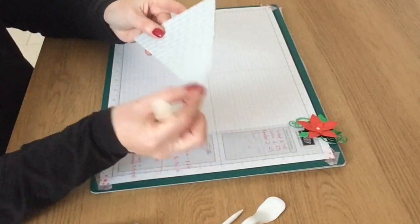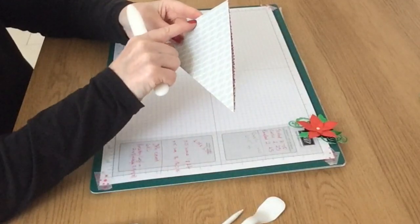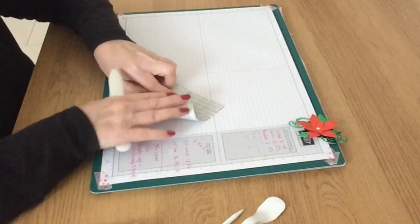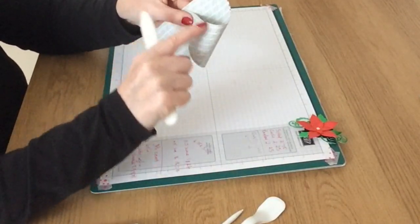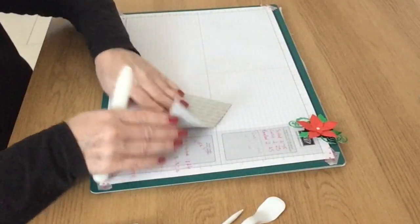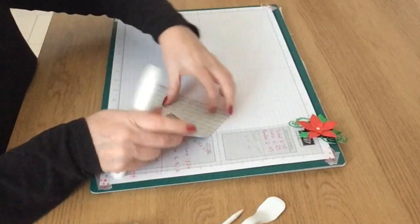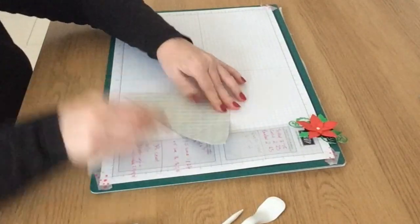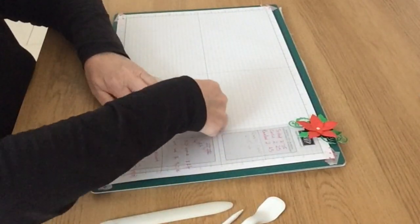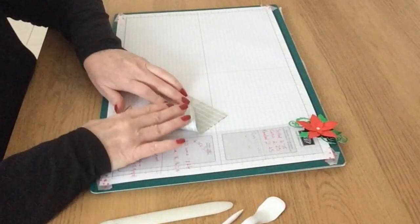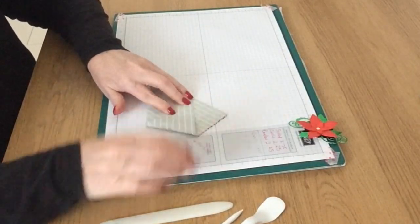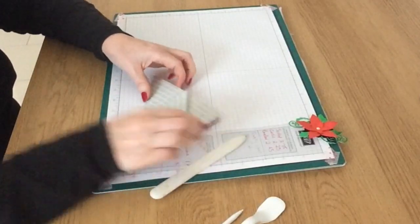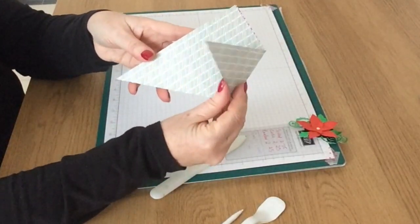So now you're going to bring one of the points up so it comes up here. You want it to come so that this is in a straight line. And then again burnish it with your bone folder. So that's how it's looking now.